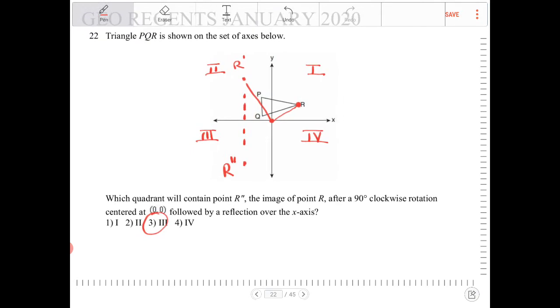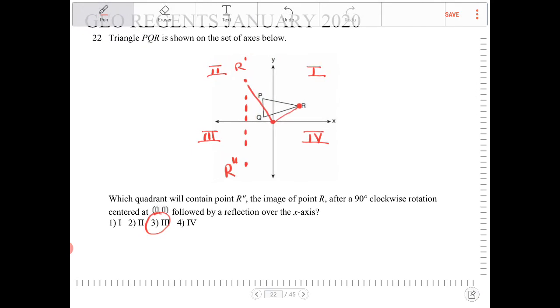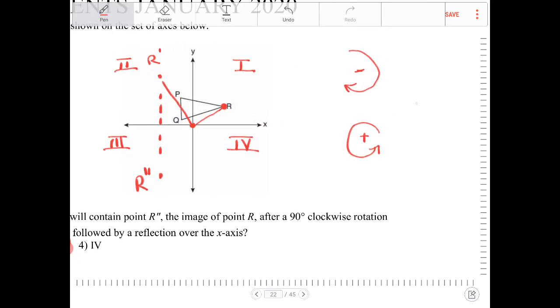If ever you get confused about which way things are supposed to rotate, like which way is positive, which way is clockwise, right? Clockwise is like this, right? And that's actually a negative rotation. Why is that a negative rotation? So this is negative. And then this is supposed to be positive. How do we know why is that the convention?